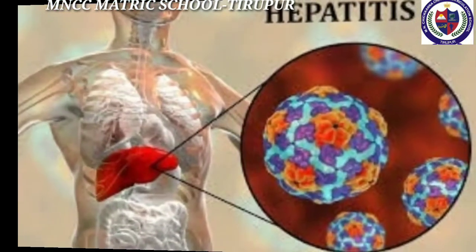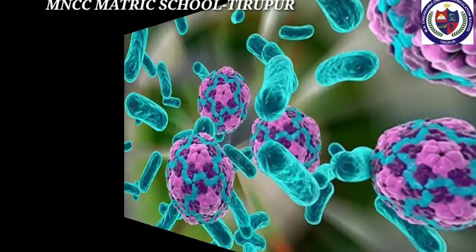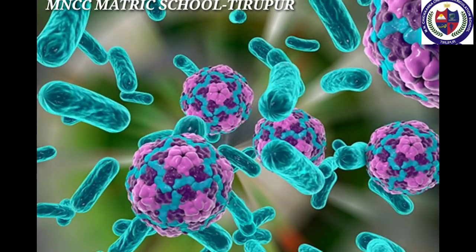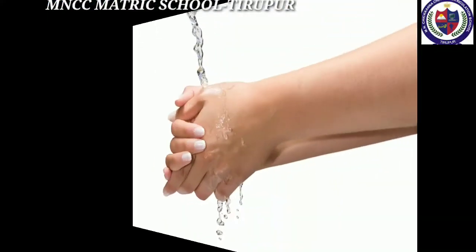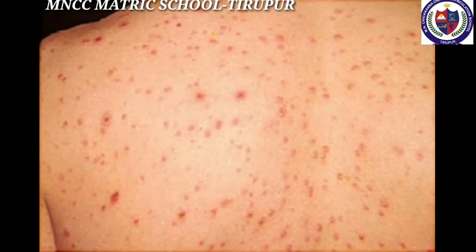First one is hepatitis. Hepatitis is one of the most dangerous and fatal diseases, caused by hepatitis virus A, B, C, D, and E. Its mode of transmission is contaminated water, sharing of needles, and blood transfusion. The symptoms of hepatitis are loss of appetite, vomiting, and eyes and urine turning yellow in color.